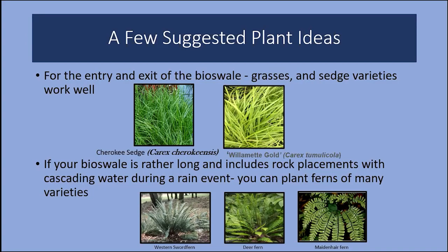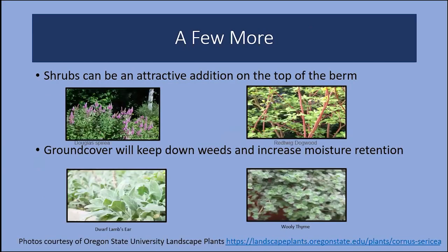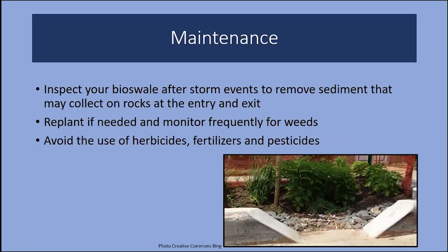Along the course of your bioswale, ferns of all types will thrive, as will many other perennials that enjoy full sun or shrubs for full sun to part shade. Shrubs scattered along the banks can be natives or hybrid varieties — pictured here are Douglas spirea and red twig dogwood. Sun or shade exposure is an important consideration. Ground covers for your bioswale berms might include dwarf lamb's ear or woolly thyme. Respect the maturity of your plants — if you plant a Douglas spirea and a ground cover, it might shade out the ground cover.